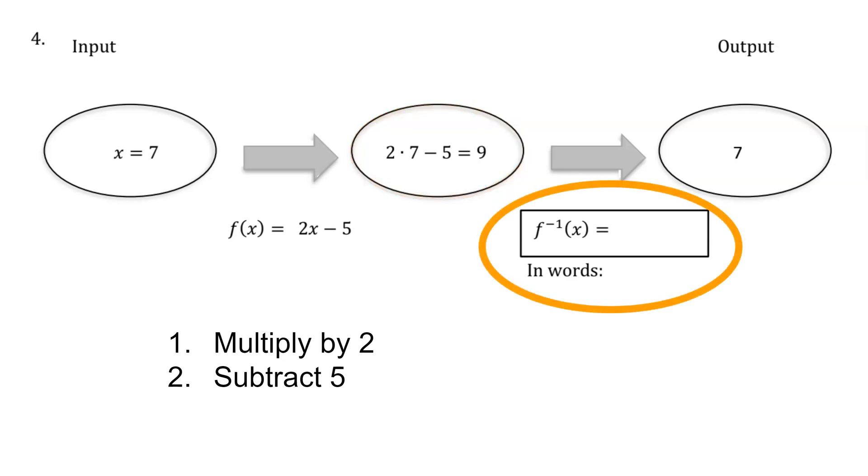In order to find the inverse function, I need to do the opposite operations in the reverse order. The opposite of subtracting by 5 is adding 5, and the opposite of multiplying by 2 is dividing by 2. What that would look like in algebraic form is (x + 5) divided by 2. So that is the inverse function in this problem.